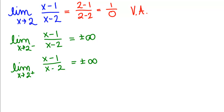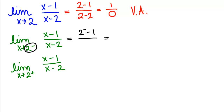We're going to reason this through. If we have a number a little bit less than 2 and we subtract 1, that gives us a positive number, because something close to 2 minus 1 is still positive. And if we take a number a little bit less than 2 and subtract 2, we've taken away more than we had, so we get a negative number. A positive number divided by a negative number is negative.